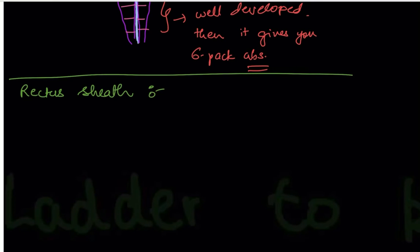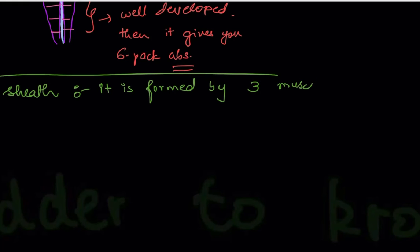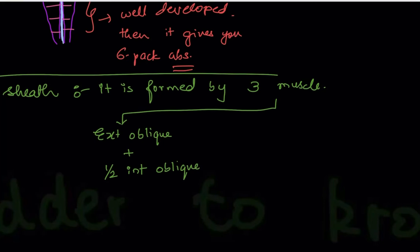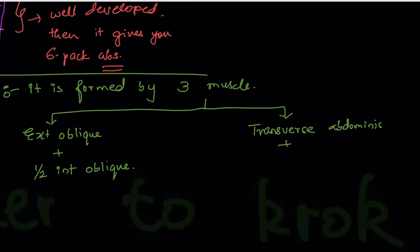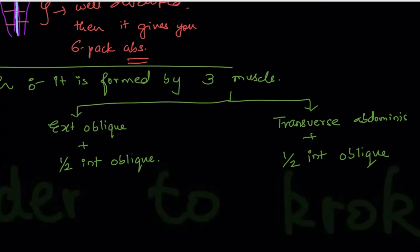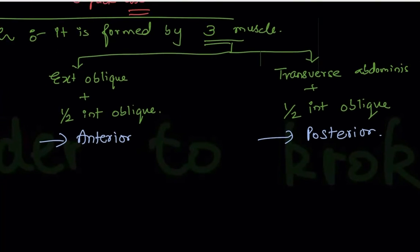The rectus sheath is a covering. It is formed by three muscles: external oblique, plus half of internal oblique for the anterior wall, and transverse abdominis plus the other half of internal oblique for the posterior wall. So internal oblique is divided into two halves — one half goes with external oblique and the other with transverse abdominis.